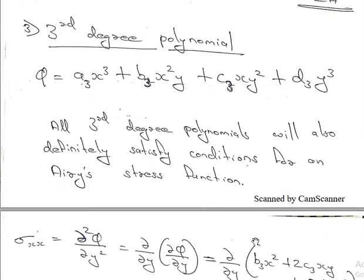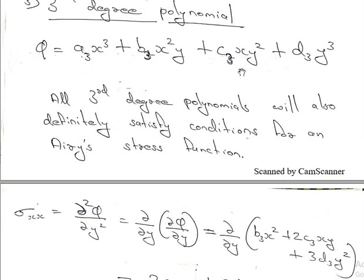In the third-degree polynomial, this is the equation of the third-degree polynomial. From the third-degree polynomial, the x raised to 3 is equal to the term of x raised to 3 and y raised to the power of y. The third-degree polynomial is equal to the fourth derivative of 0.